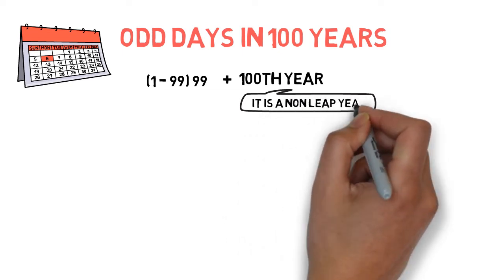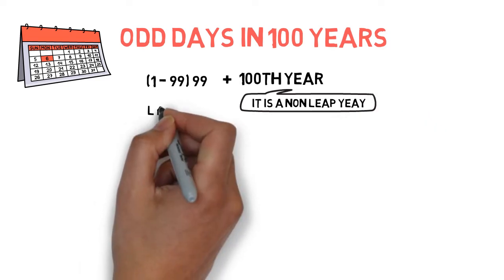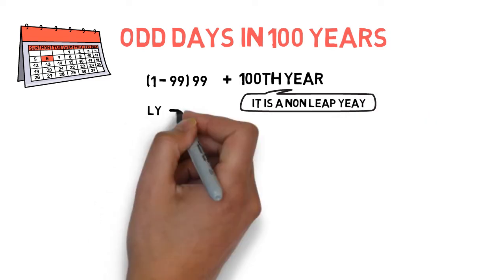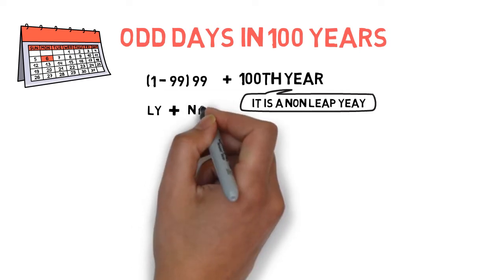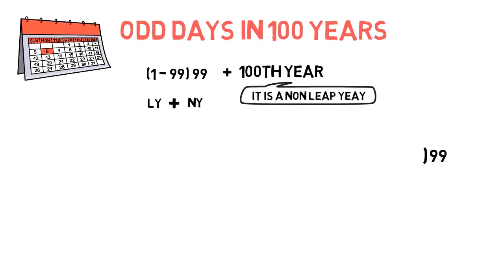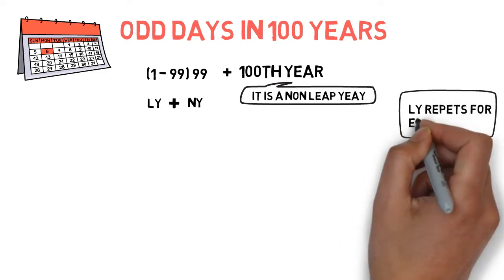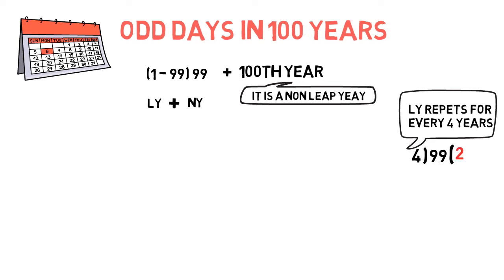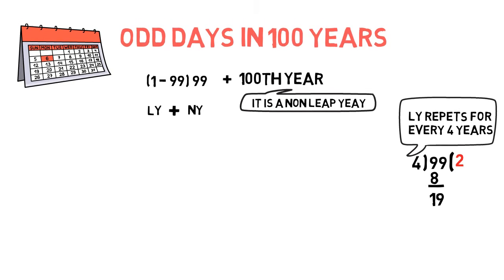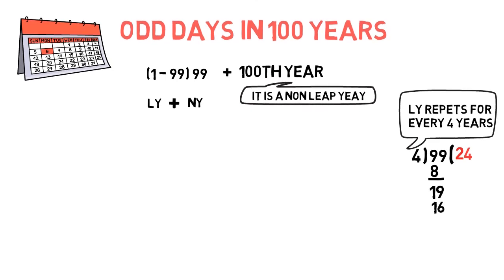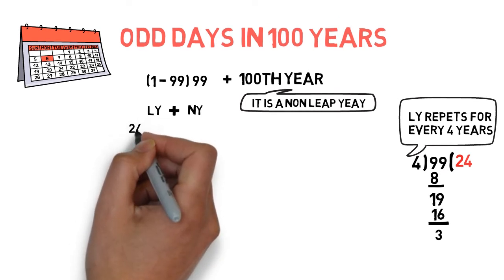By this we can conclude that the 100th year has 1 odd day. Now we will split these 99 years into leap years and non-leap years. For that, we divide 99 by 4, because for every 4 years the leap year repeats. By doing that division, we find that there are 24 leap years in 99 years.